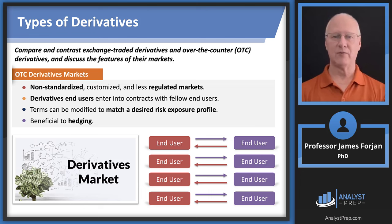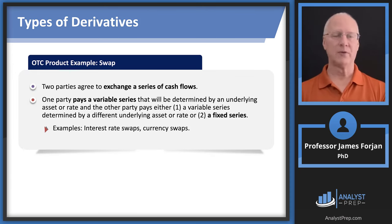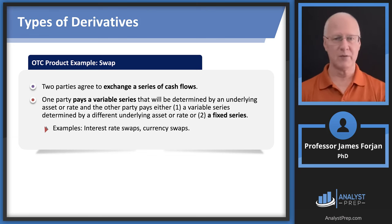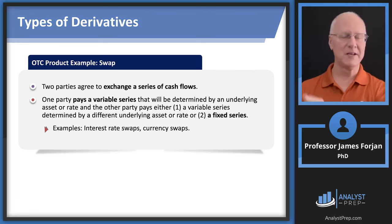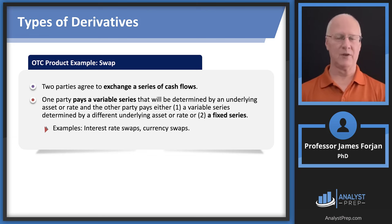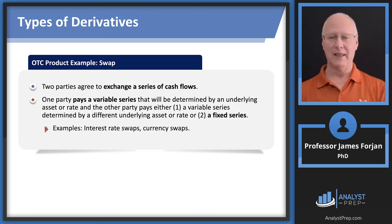OTC derivatives are non-standardized, customized, less regulated markets. Terms can be modified to match a desired risk — there's the customized part. This is me and Betty in the over-the-counter market. A traditional swap is an interest rate swap where one agrees to pay a fixed rate and the other a floating rate. We could do this over three years or five years or more. We can also swap currencies. The Procter and Gamble scandal involved interest rate swaps and currency swaps.